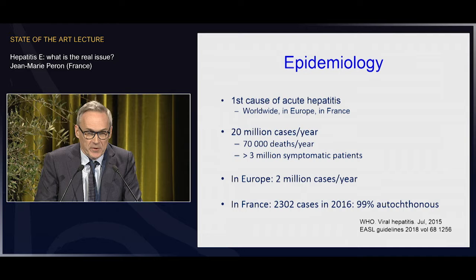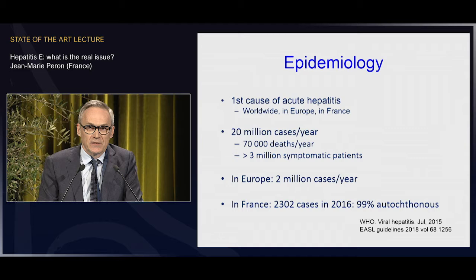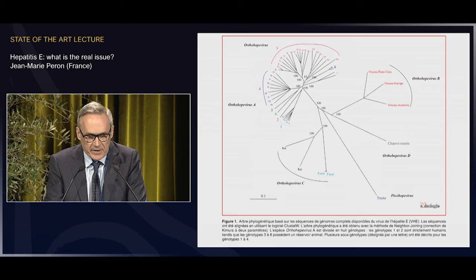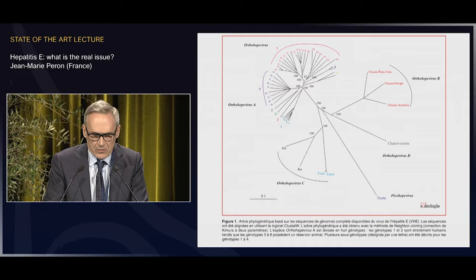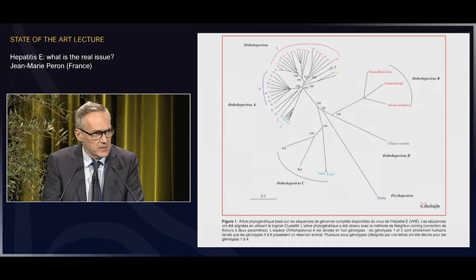Importantly, almost all the cases in France are autochthonous. There are 8 genotypes of hepatitis E, and 5 can infect humans. Genotypes 1 and 2 are strictly human. Genotypes 3 and 4 infect animals and humans. And genotype 7 infects camels and humans. There will be a lunch on hepatitis E tomorrow with more virology data.